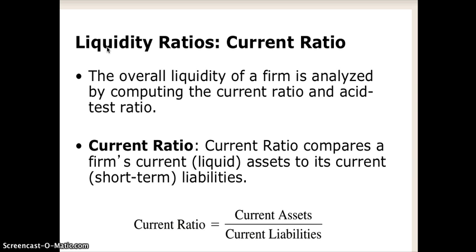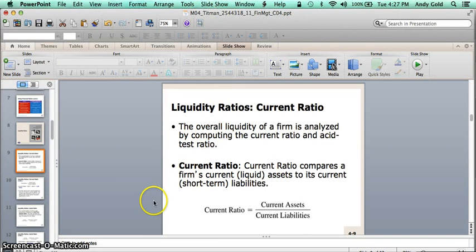Typically speaking, the higher a company's current ratio is — the greater number of current assets they have relative to current liabilities — the stronger financial position they're in. The lower the current ratio, the poorer the potential performance and more of a warning flag could be raised. If a company has a current ratio of even less than one, where you have more current liabilities than current assets, where is the company going to get money to pay for those liabilities?